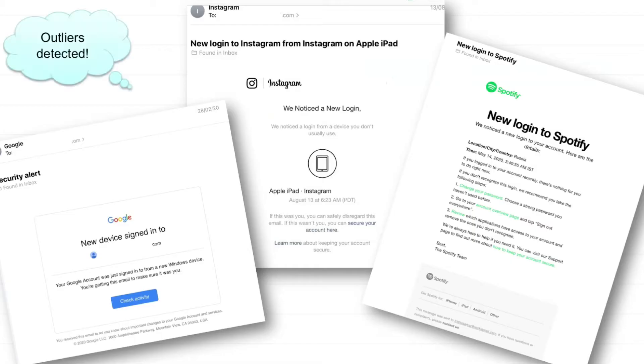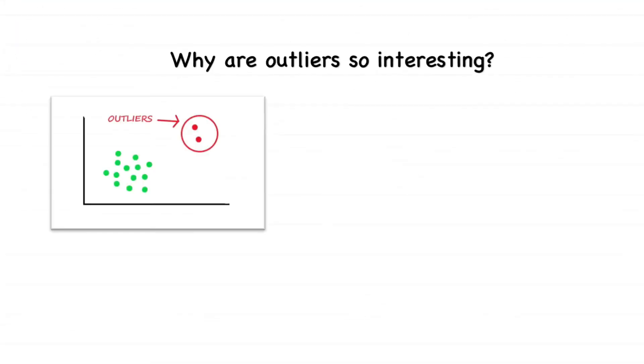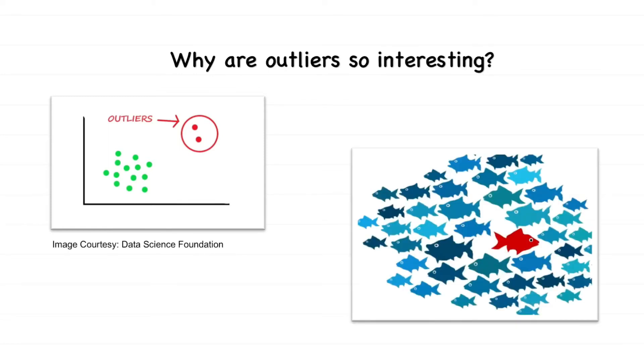Outliers are data points which are very different from the other data points. The behaviors they exhibit are not the same. This makes us suspect that the mechanism of generation of these points is not the same as the remaining data. Hence, when a person logs into your account from a different country suddenly, Spotify suspects that someone could have hacked into your account.